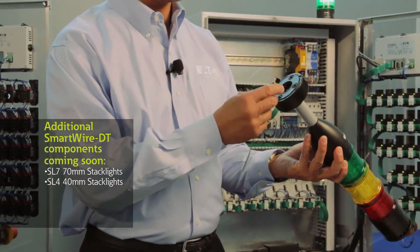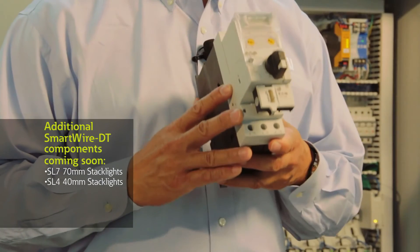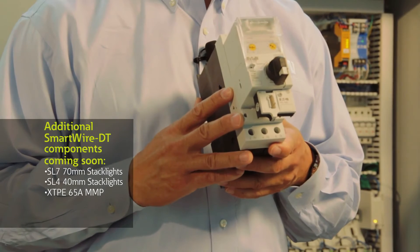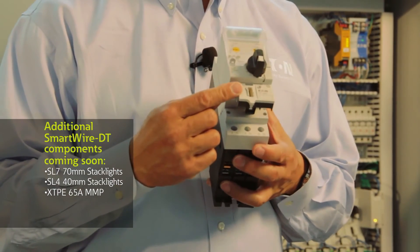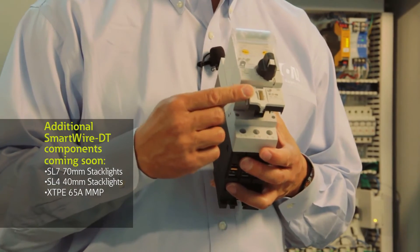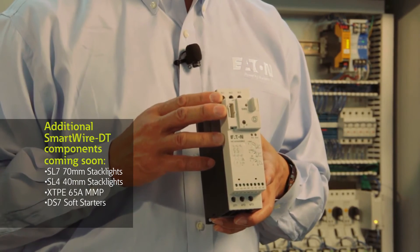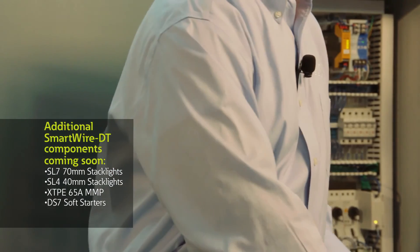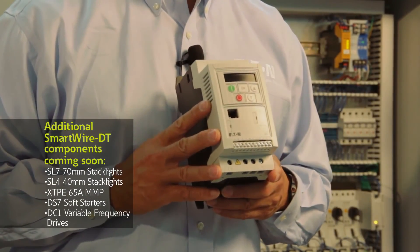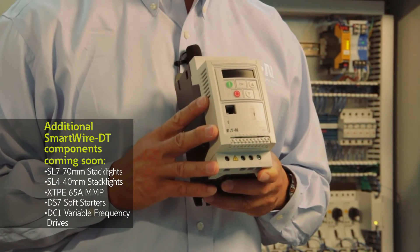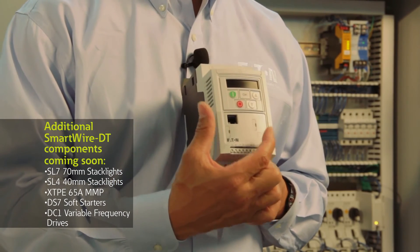Some of the new products that we have coming out with SmartWire DT are our new StackLites - the SL7 70mm StackLite and the SL4 40mm StackLite. As you can see, it has a base where you simply will be able to click in the SmartWire DT cable. Also, we have the larger frame 65-amp XDPE manual motor protector units, and this module clips in right here at the base of the MMP. We also have a full line of the DS7 soft starters that have SmartWire DT integrated into them all the way up to 150 horsepower. And finally, coming soon are the DC1 variable frequency drives up to 15 horsepower at 40 volts.